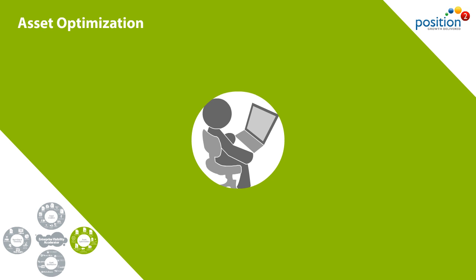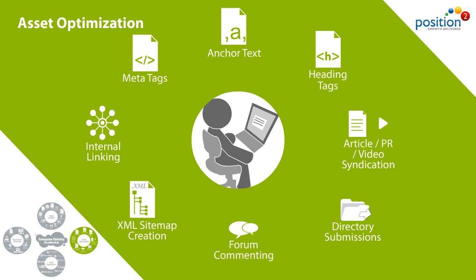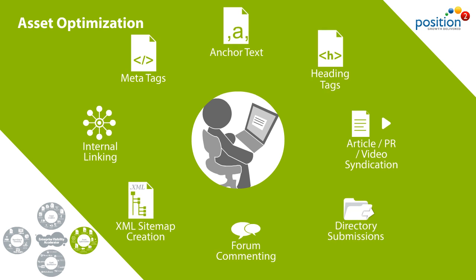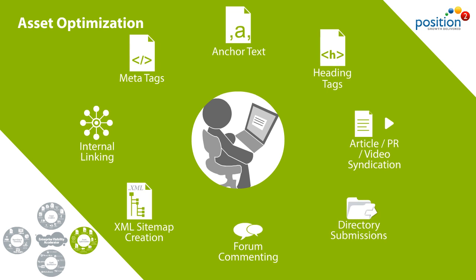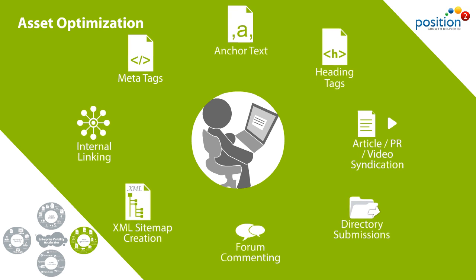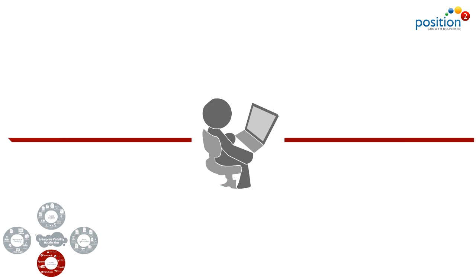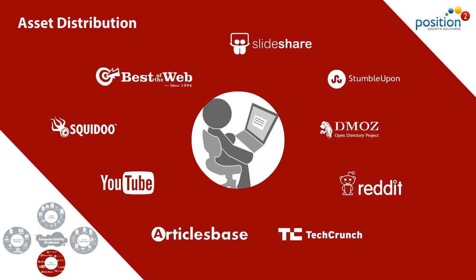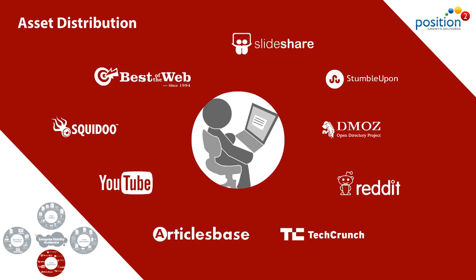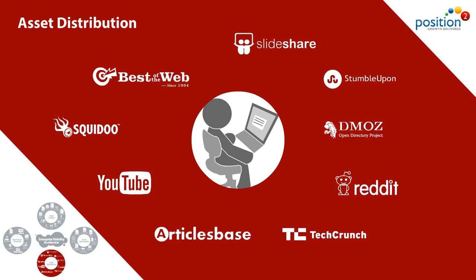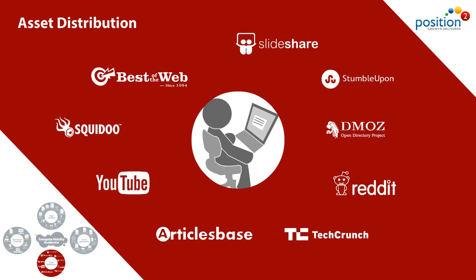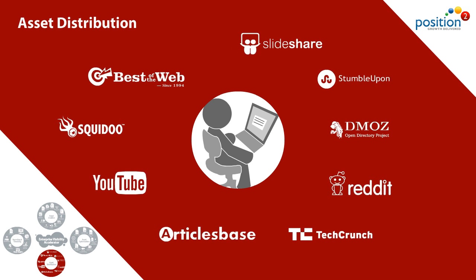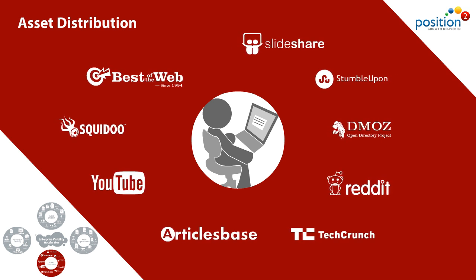Step 2: Asset Optimization. Every asset is optimized to ensure it's easily found by search engines. Step 3: Asset Distribution. The assets are distributed across selected social media platforms and content-sharing sites, based on your target audience.